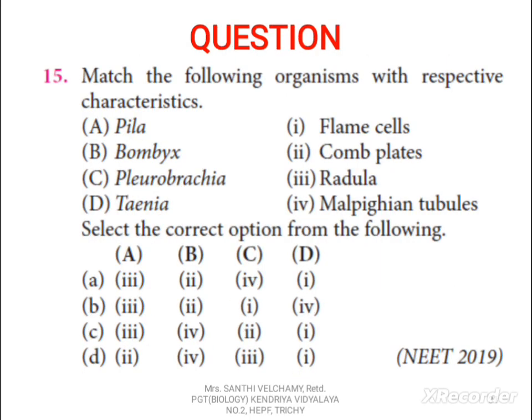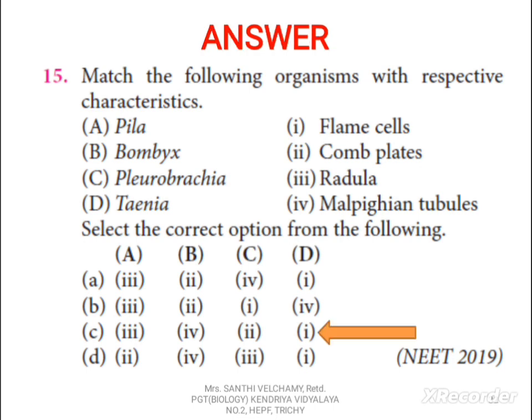15th question: two columns are given — match A, B, C, D with 1, 2, 3, 4 and select the correct option. The correct option is C. The buccal cavity of the apple snail possesses a rasping organ called radula, which has transverse rows of teeth for cutting grass. Silk moth Bombyx — an insect — has Malpighian tubules as excretory organs. Pleurobrachia is a ctenophore having 8 ciliary plates called comb plates. Taenia — Platyhelminthes — has flame cells for excretion and osmoregulation.